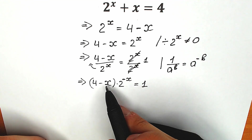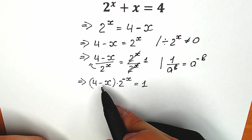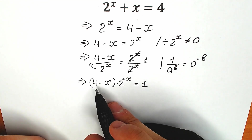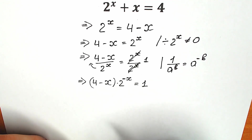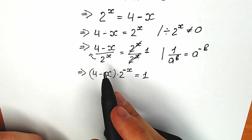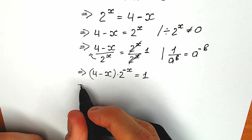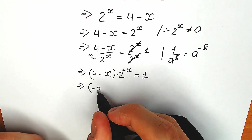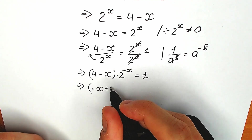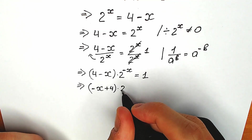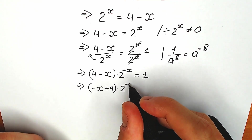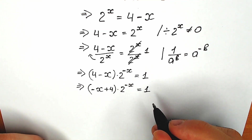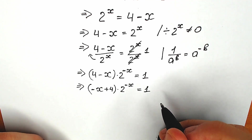Right now let's swap positions. We can write 4 minus x as minus x plus 4 — we change nothing, just swap positions. So we have minus x plus 4 times 2 to the power minus x equals 1.